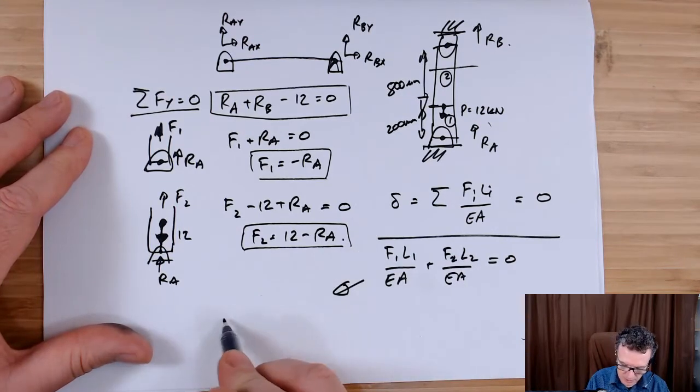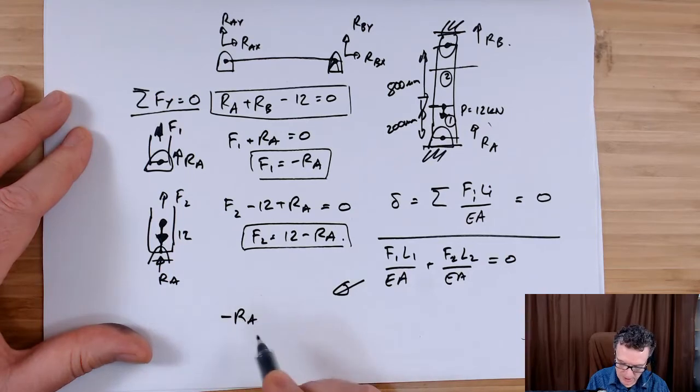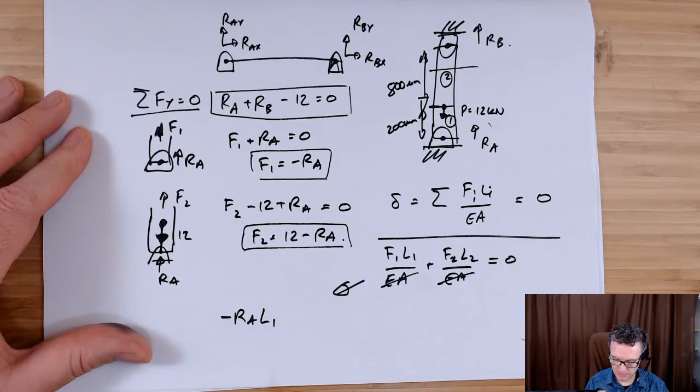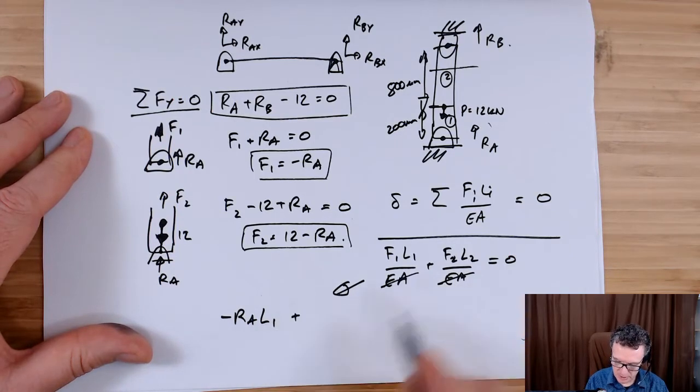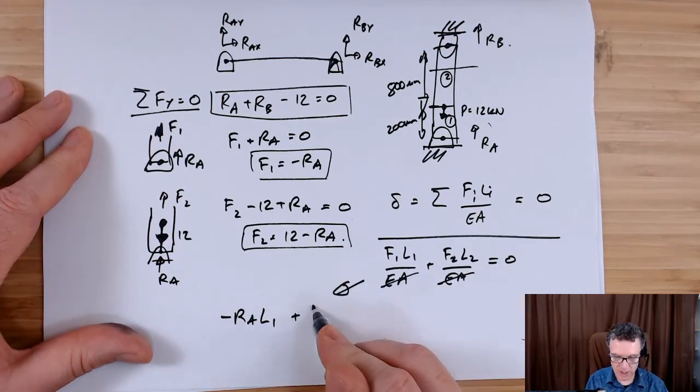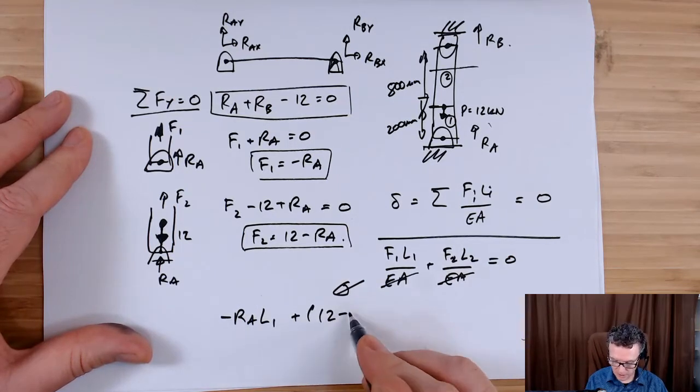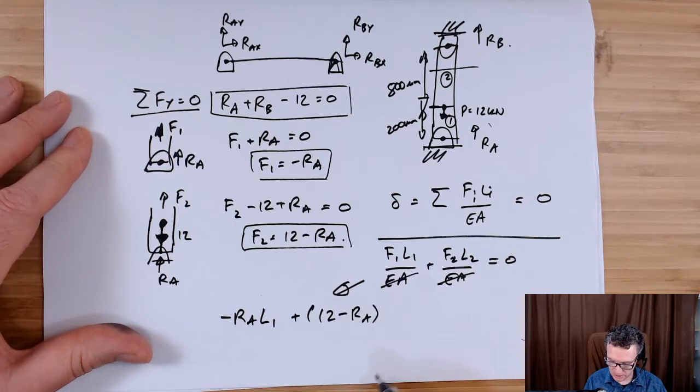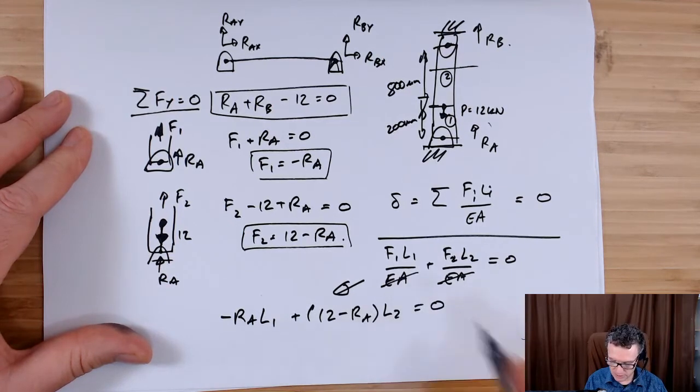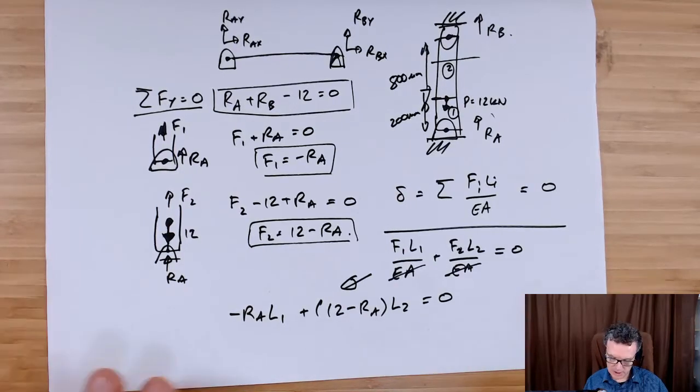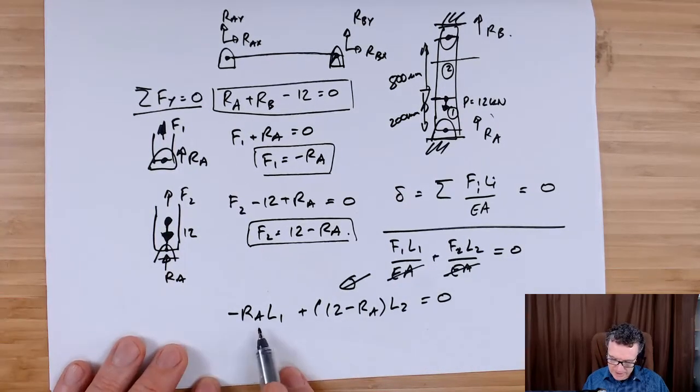We've got plus F2, so we're going to have the 12 take away Ra here times by L2 equals zero.